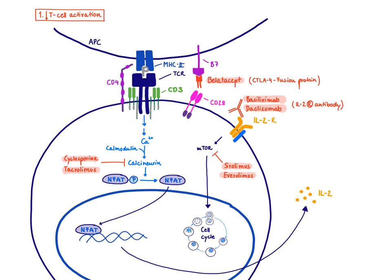A fourth way to block T-cell activation is downstream of IL-2 signaling. mTOR is responsible for the production of cyclins, which drive the cell into the cell cycle. Sirolimus and everolimus inhibit mTOR, a downstream signaling molecule of the IL-2 receptor, and therefore also decrease the proliferation of T-cells.